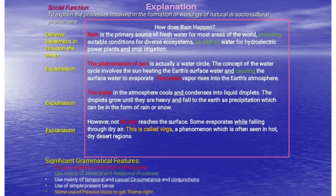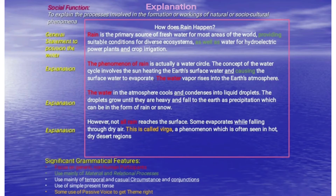To better understand this type, here is an analysis example of explanation text about natural phenomena and the language features used in the text. The significant grammatical features include: focus on generic non-human participants (shown in red), use mainly of material and relational processes (shown in green), use mainly of temporal and causal circumstances and conjunction (shown by underlined words), use of simple present tense, and some use of passive voice, shown in the orange color.